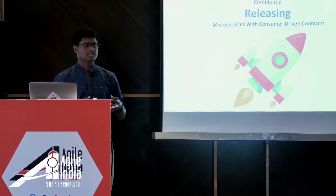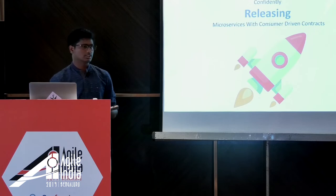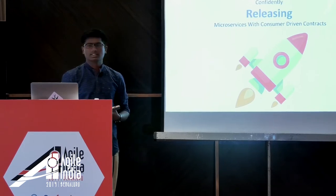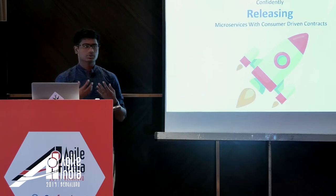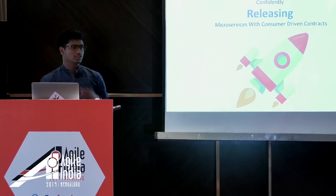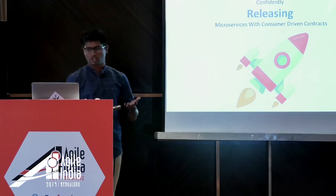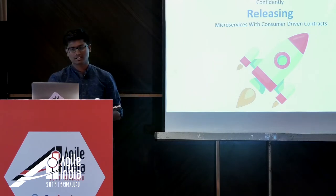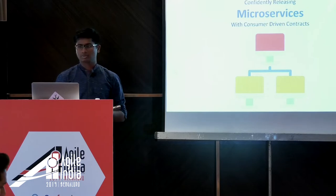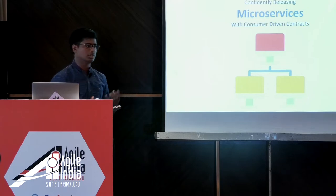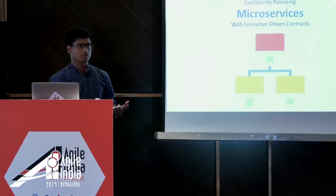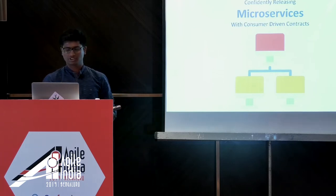Second is 'releasing' — this is the ability to go into production. In short, we can say it as continuous delivery. So how confident am I to go to production, or what is the ability of a team to take one service to production — this is what releasing means here. Microservices, as you might be aware, means having multiple components, multiple individual units of pieces combined as one product going to production.